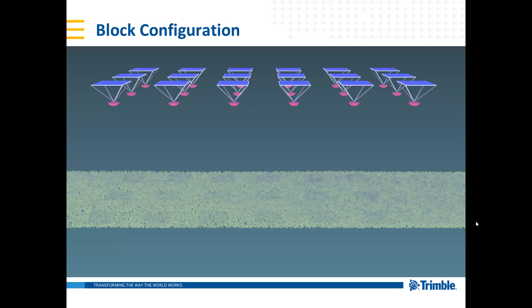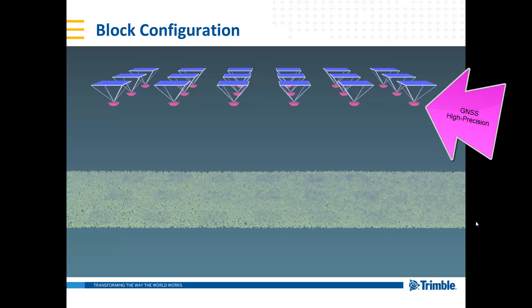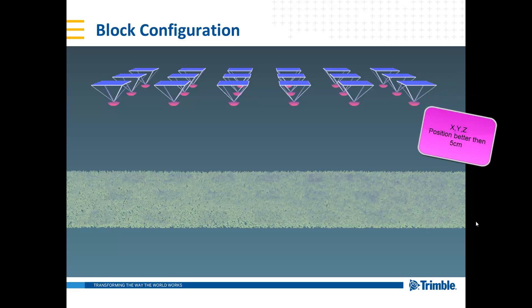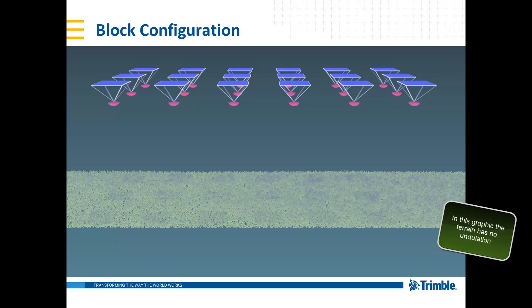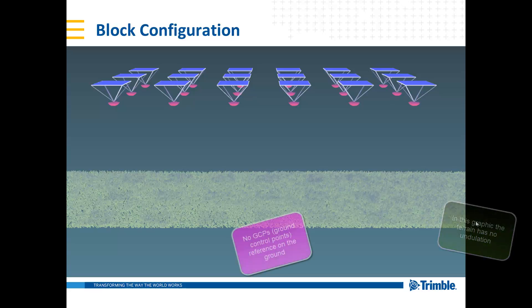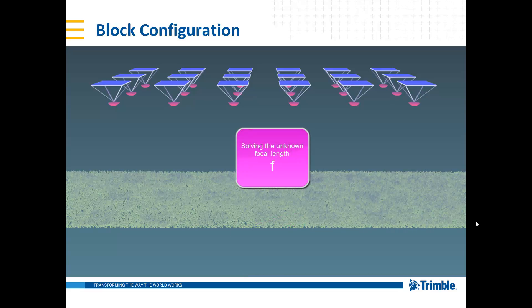A very common case is that people now have GNSS information with high precision on their UAVs, shown in this graphic by the purple dots at the bottom of the camera — each camera has a very high position in X, Y, Z. Unfortunately, if you don't have any control point on the ground, the problem in this block configuration is solving the focal length, because the terrain itself does not have strong height changes. Without a reference point on the ground, the focal length is a very unknown part of our adjustment, and therefore calibrating the focal length and the complete camera will suffer in accuracy.